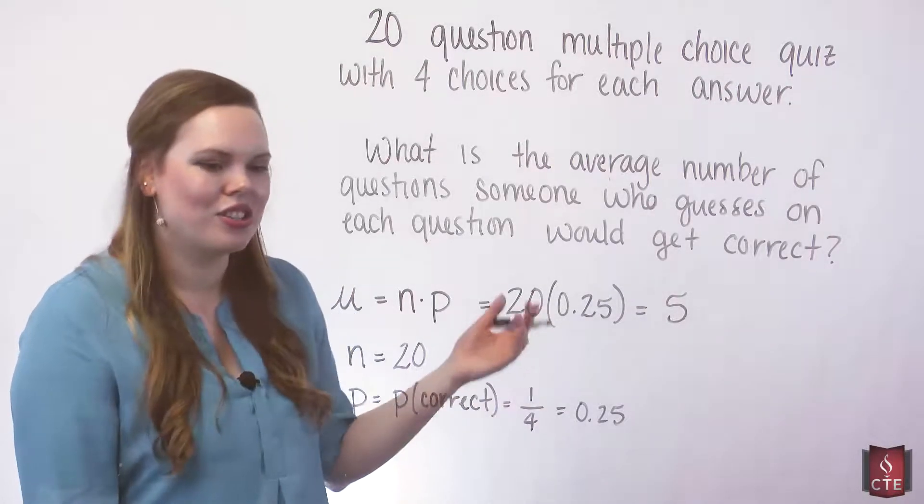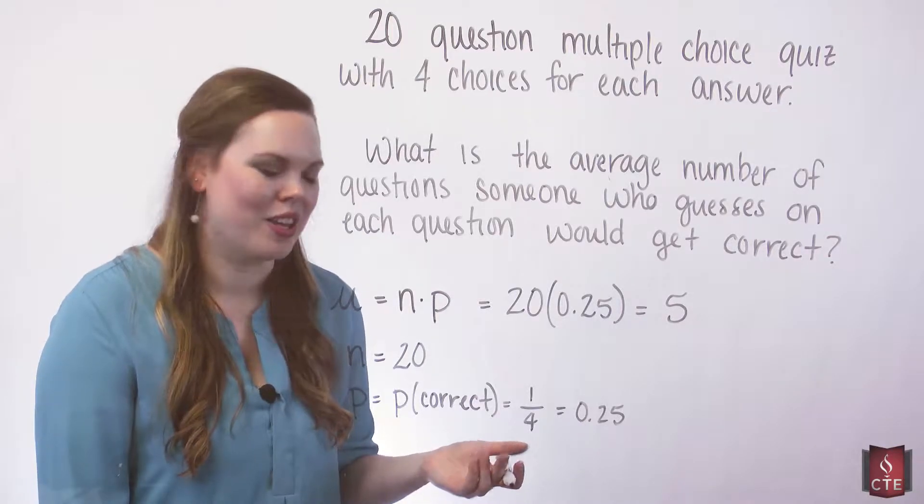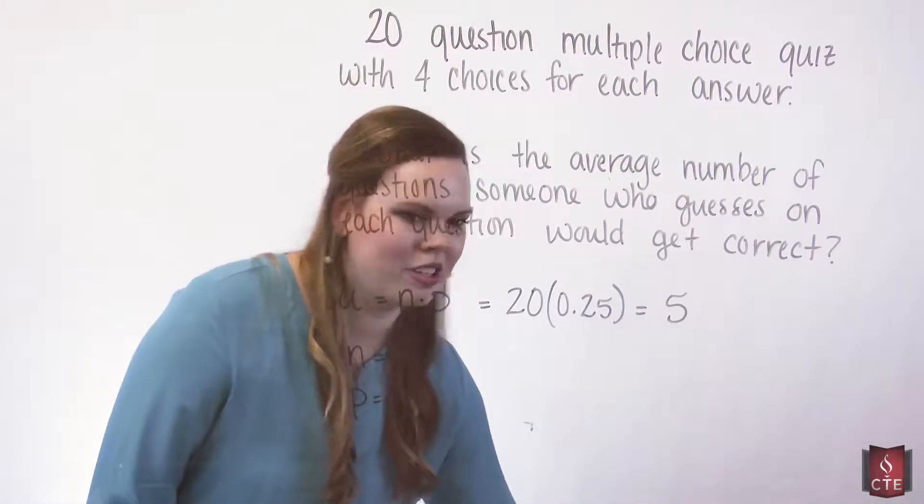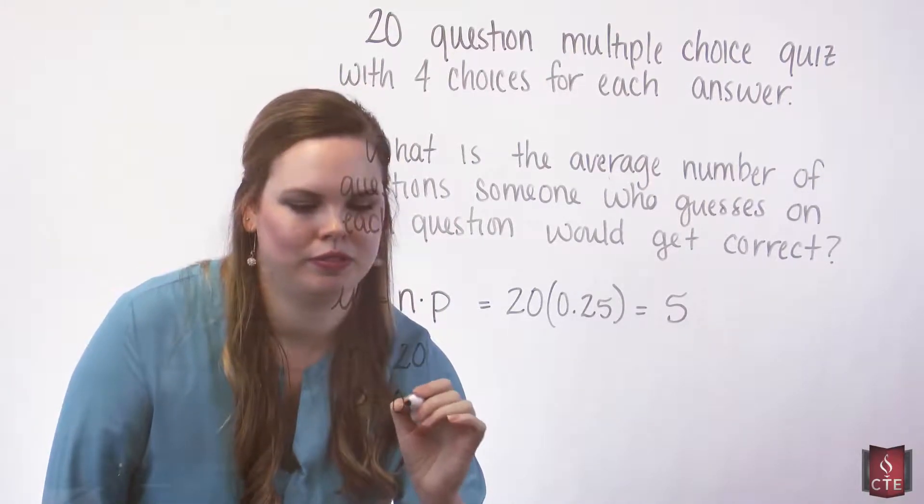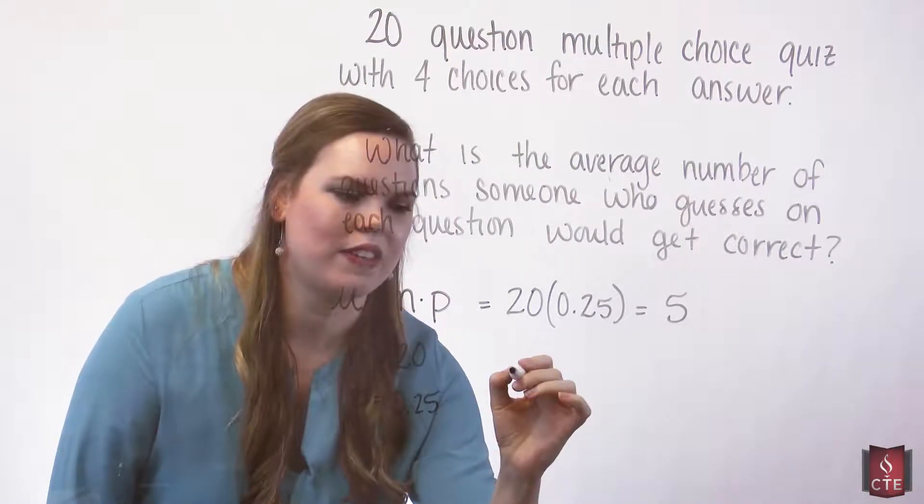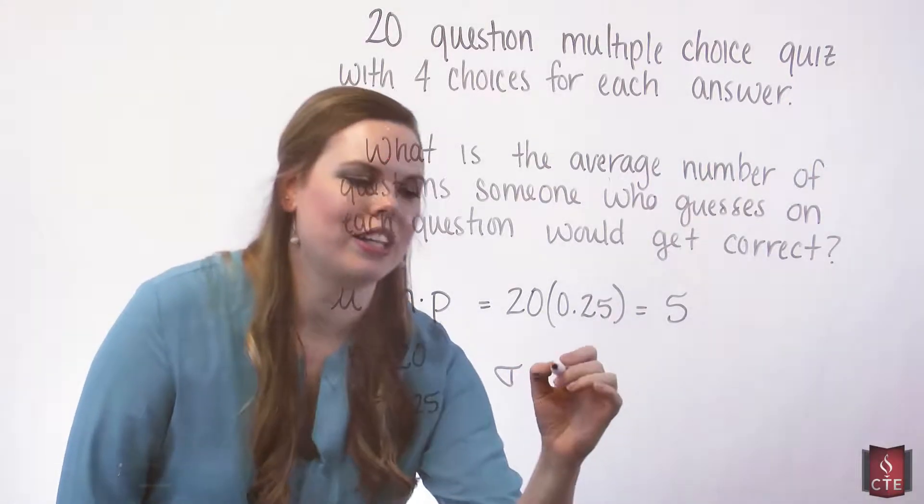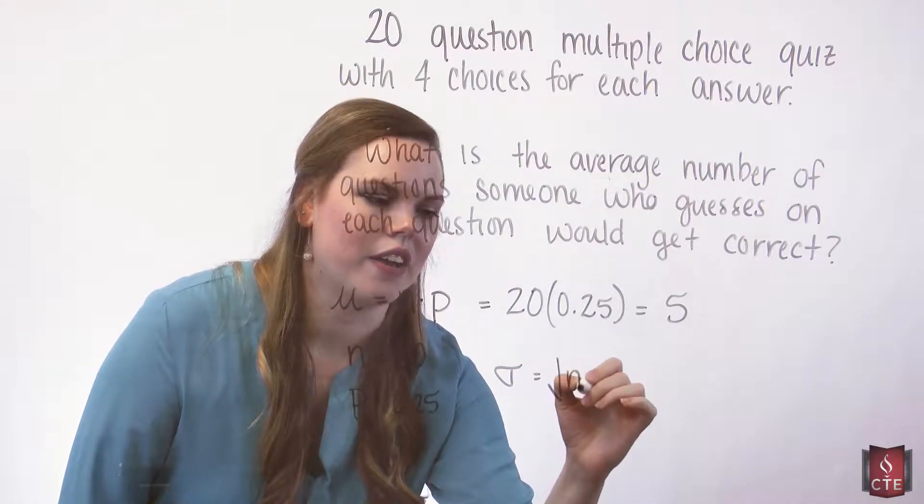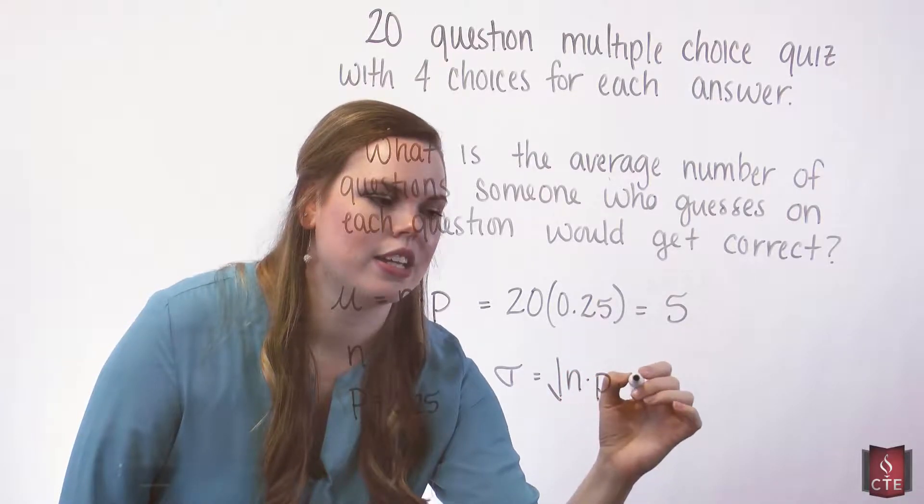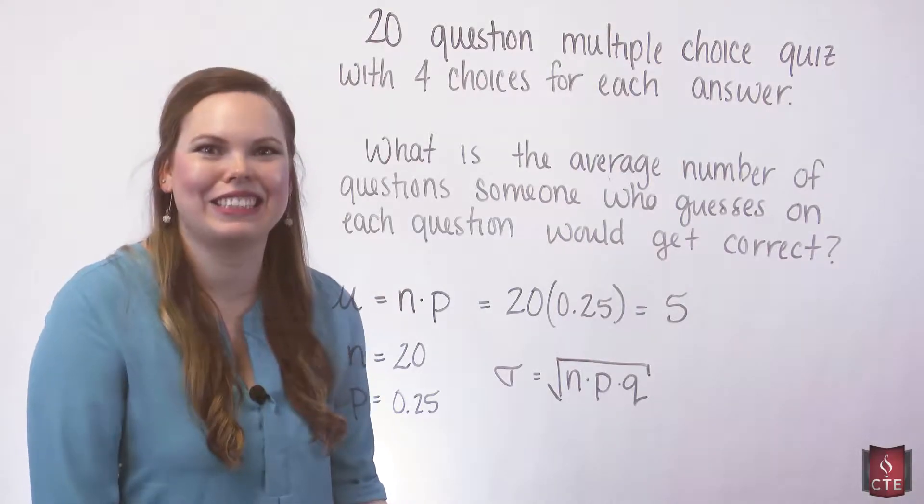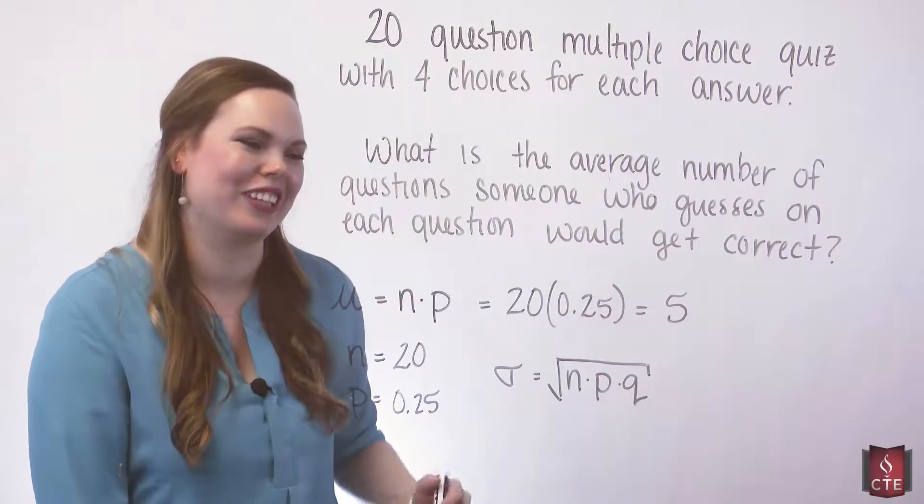And just for fun, let's find the standard deviation of this as well. The standard deviation, sigma, for a binomial is the square root of n times p times q. One of our easiest standard deviation formulas.